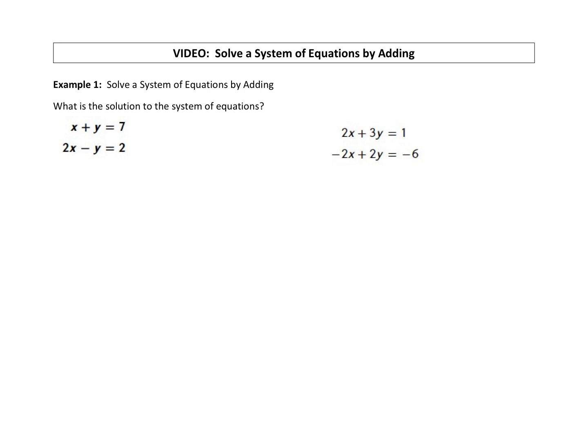So in our first system, what I want to point out is the structure of the system. You can see that our x's are lined up vertically, our y's are lined up vertically, and the equal sign is lined up vertically and then these numbers on the end are lined up. If everything is lined up like this, this is a really good system to solve with elimination.